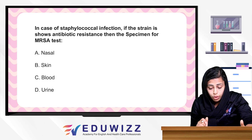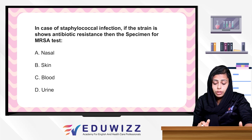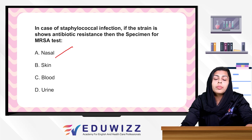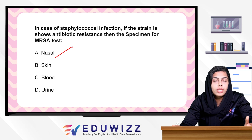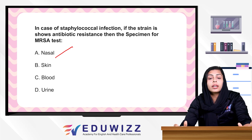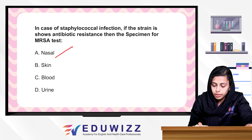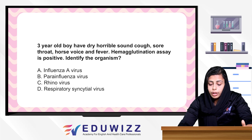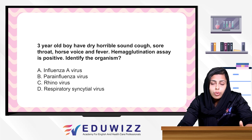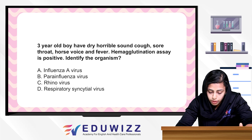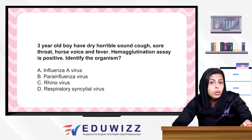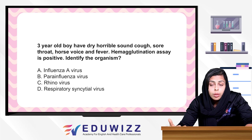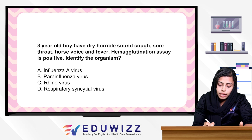Next question: In case of Staphylococcal infection, if the strain shows antibiotic resistance, the specimen for MRSA testing should be nasal, because Staphylococcal organisms reside in the nasal area showing MRSA resistance. Next: A 3-year-old boy has a hoarse cough, sore throat, hoarse voice, and fever. Hemagglutination test is positive. The answer is influenza virus.